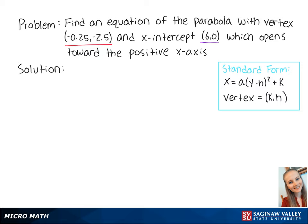Notice that standard form is reversed because the equation is in terms of y. When we plug in the coordinates of the vertex, we get x equals a times (y plus 2.5) squared minus 0.25.